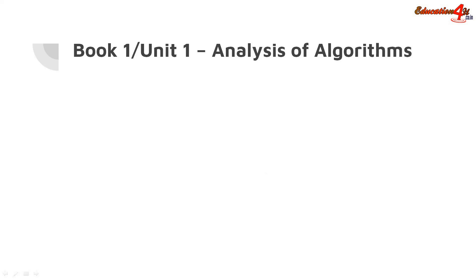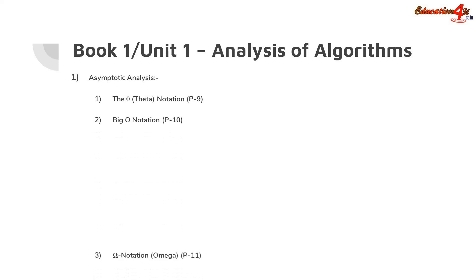Book 1, Unit 1 — that is analysis of algorithms. First of all, you should know what is asymptotic analysis. In this, you should know theta notation, big O notation, and omega notation. These are given on page number 9, 10, and 11 respectively.